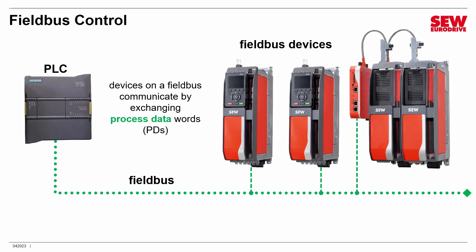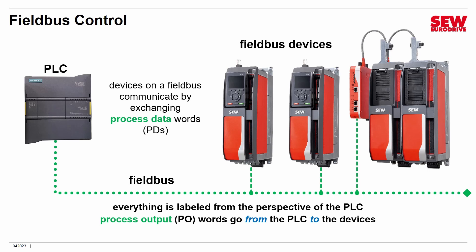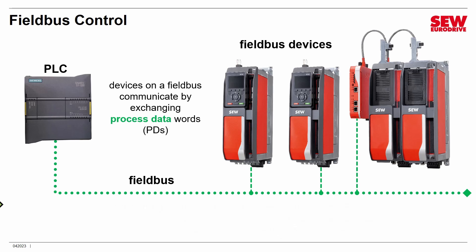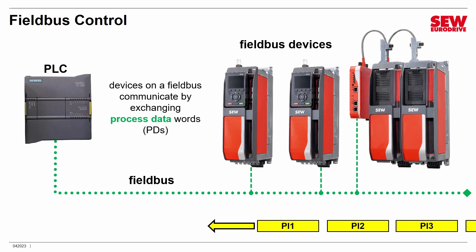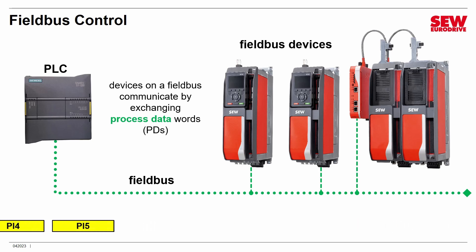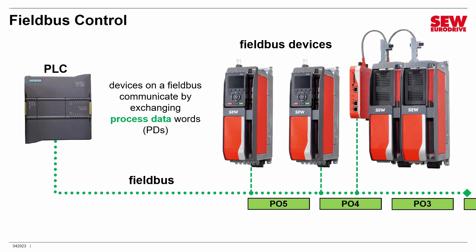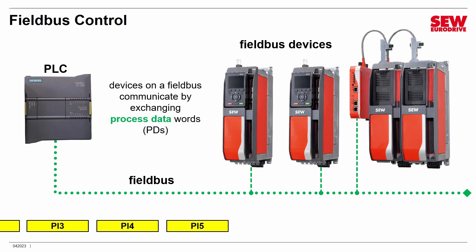Devices on field buses communicate by exchanging process data words — 16-bit words that go back and forth between the PLC and the devices. Everything is labeled from the PLC's perspective: process output words go from the PLC to the devices, and process input words go from the devices back to the PLC.